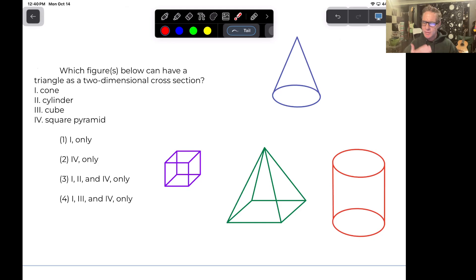So remember, a cross-section is just a slice, a two-dimensional slice of a three-dimensional object. I always use the analogy of a deli slicer. So we go to the deli and slice off these 3D shapes. What shapes can you create by slicing them?